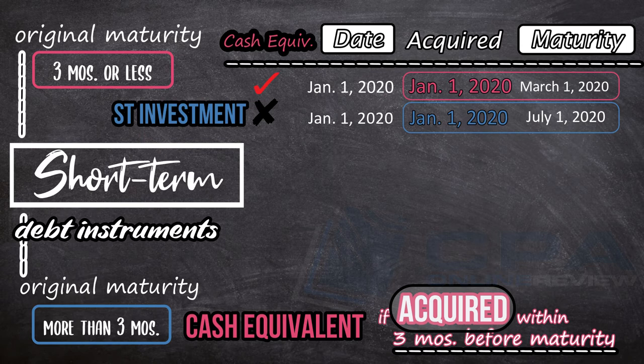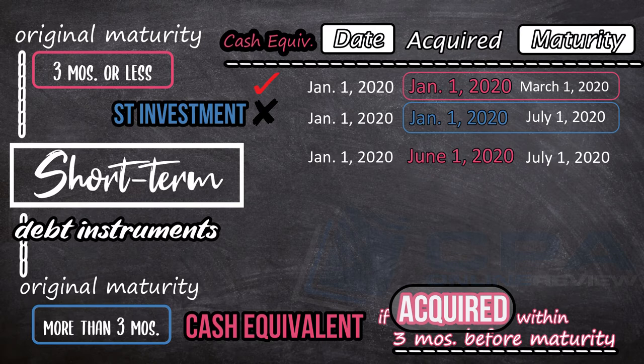Next: an instrument dated January 1, 2020, matures on July 1, 2020 — 6 months original maturity. But it was acquired on June 1, 2020. Comparing these dates, the instrument was acquired 1 month before maturity. From June 1 to July 1, it's a cash equivalent.